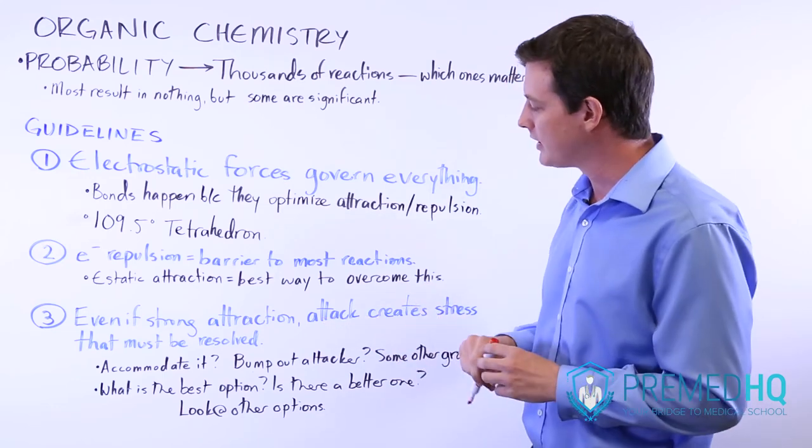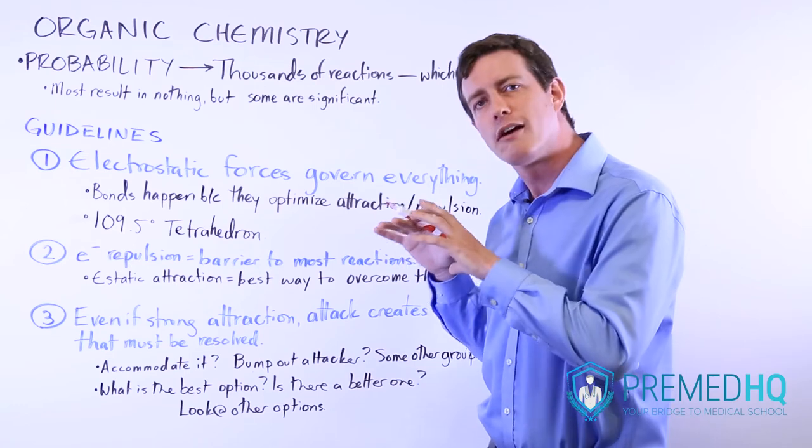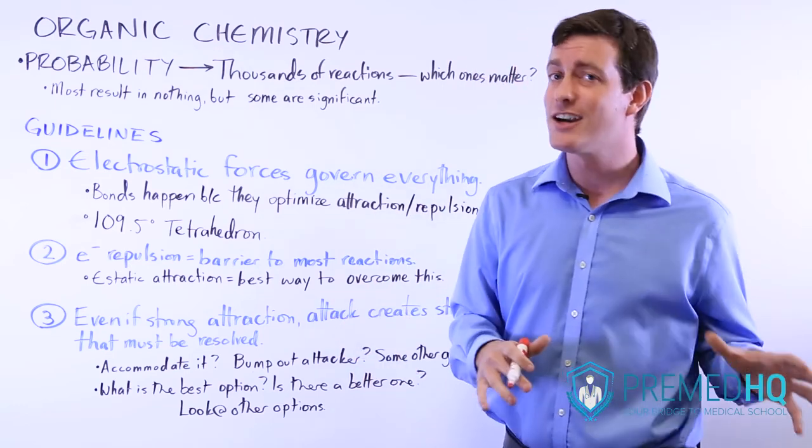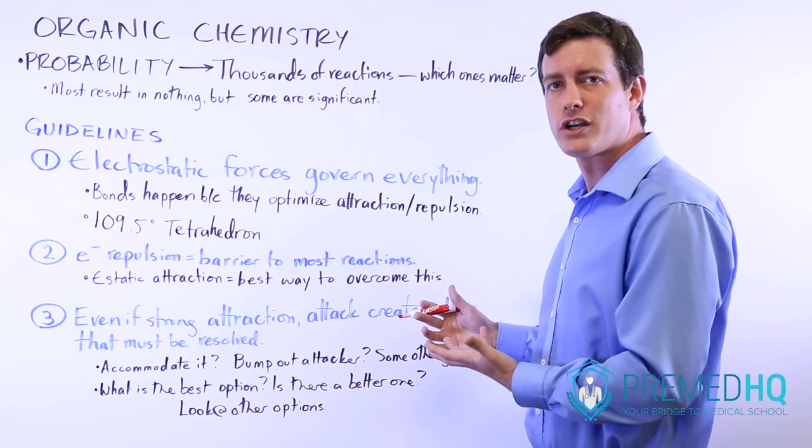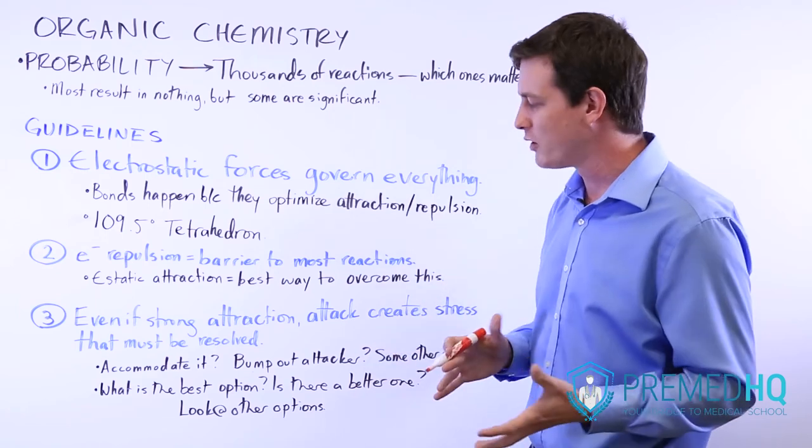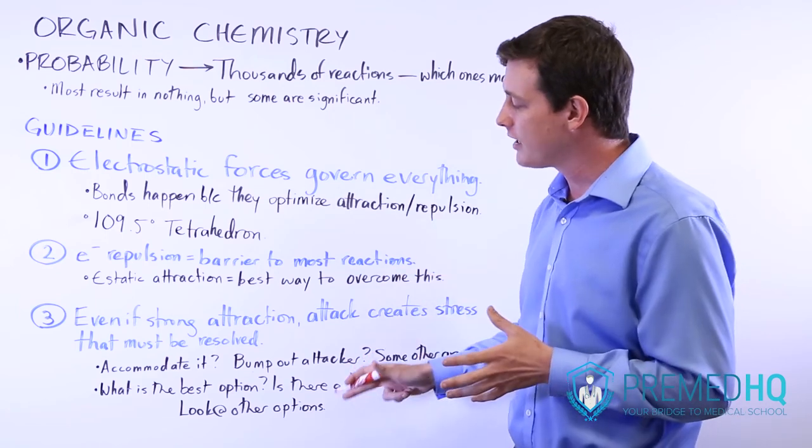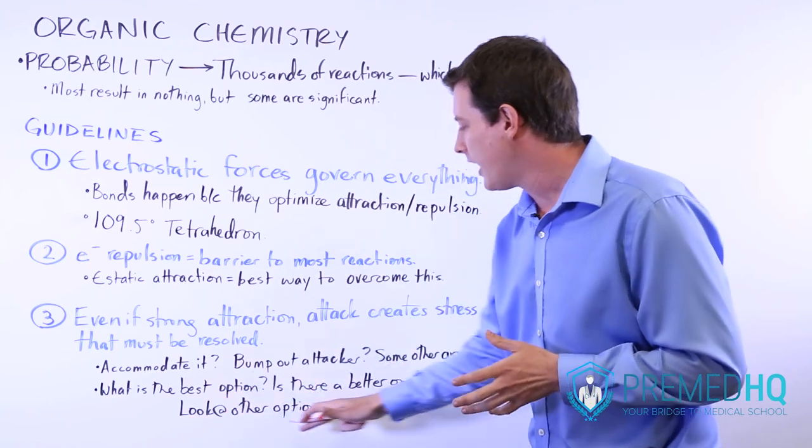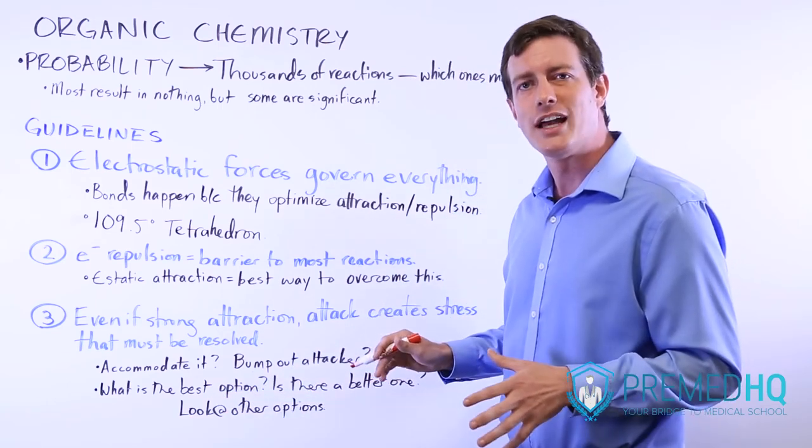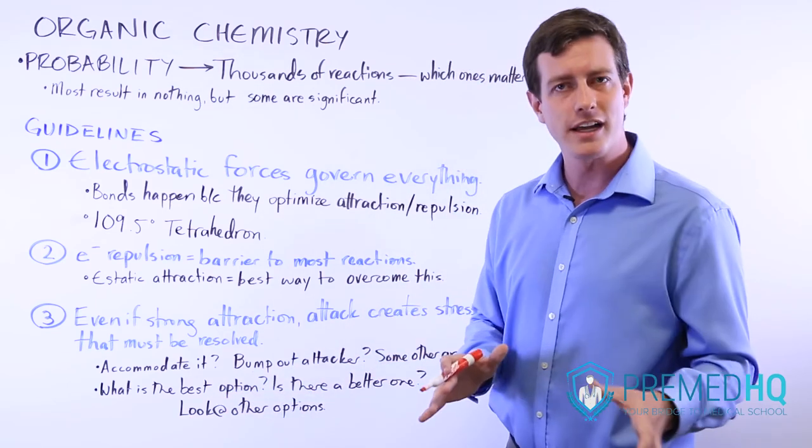...the best way to look at it is to say, okay, this looks like a really good option, but is there a better one? Is there something else that could occur and be more stable or favorable? Our job is to look at all the options available and figure out which ones are most likely to occur.